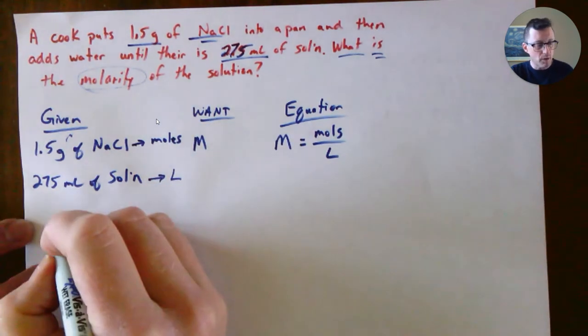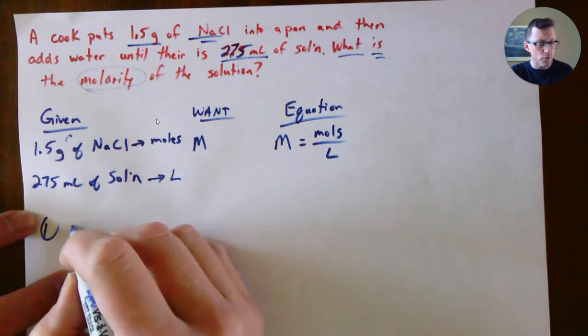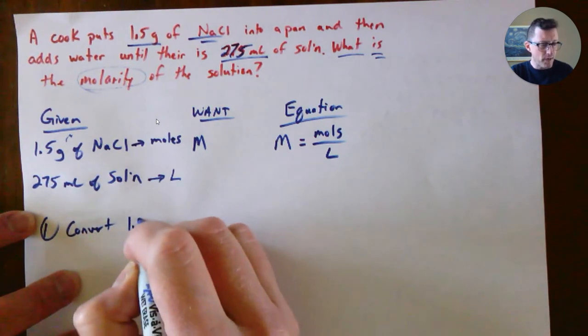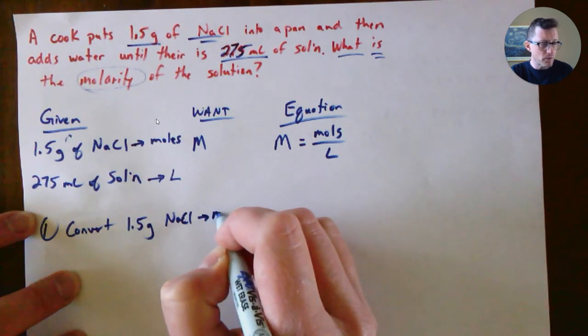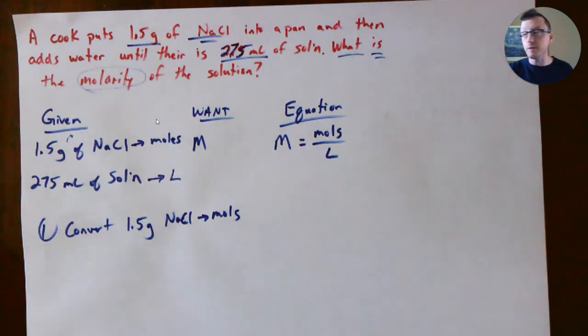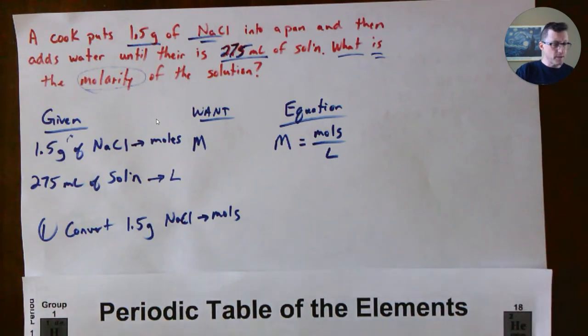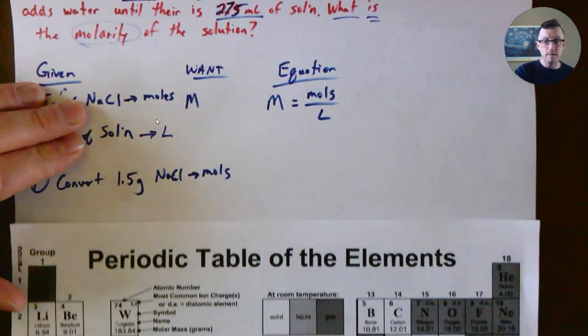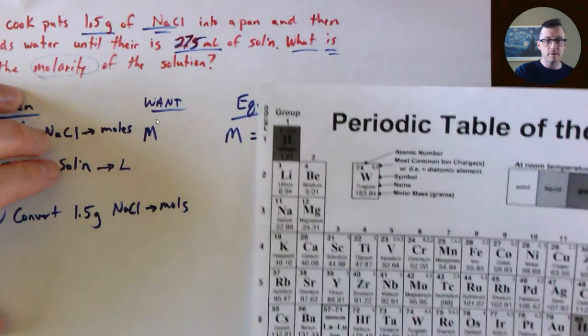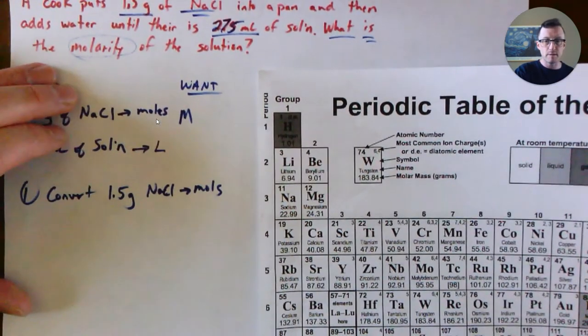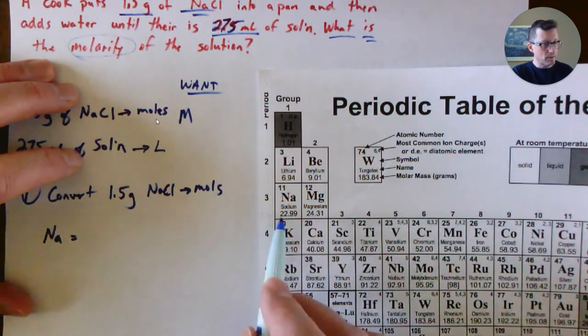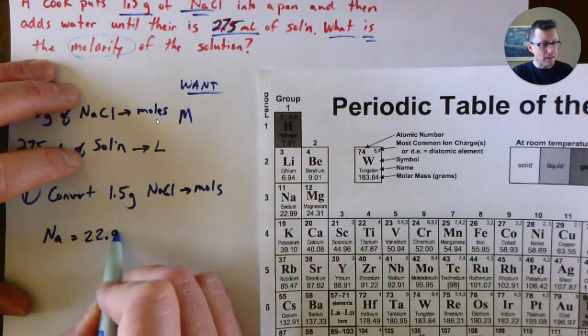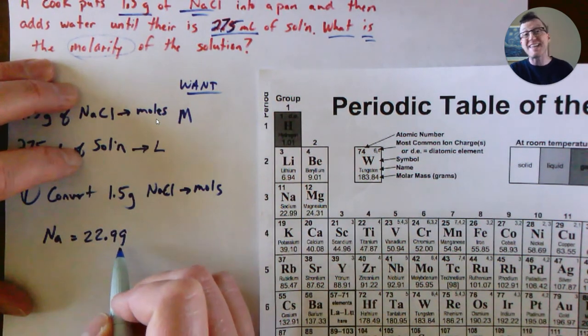I'm going to do that as the first step. We are going to convert 1.5 grams of NaCl into moles. How do we do that? Well, we need the periodic table. We have to find NaCl. So here's Na, which is 22.99.